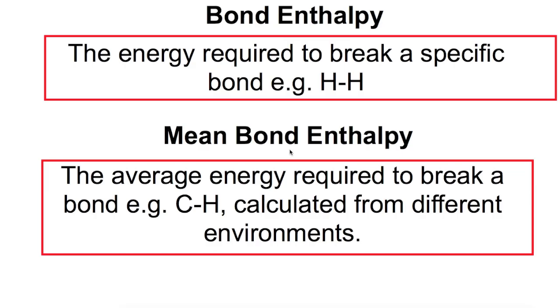They are given as the energy required to break the bond that is shown in the data book. However, if you're making the bond then the same amount of energy will be released so we'll have a negative sign in front of it. Bond enthalpy is the energy required to break a specific bond such as an H-H bond or an O double bond O and this has one specific value.